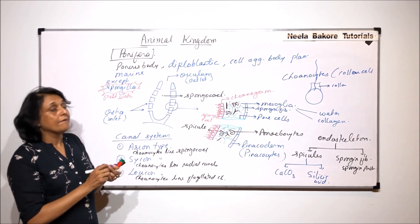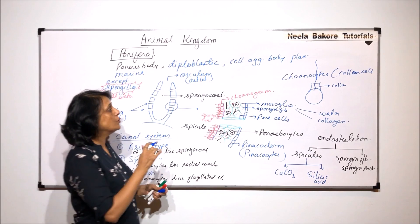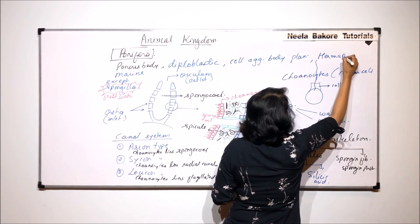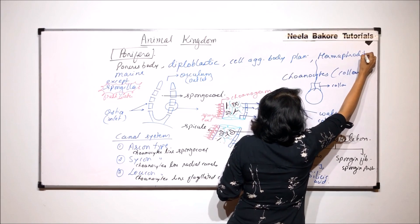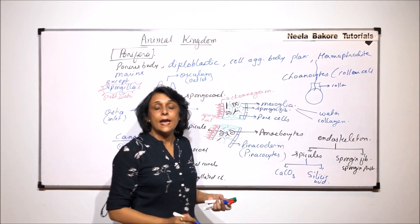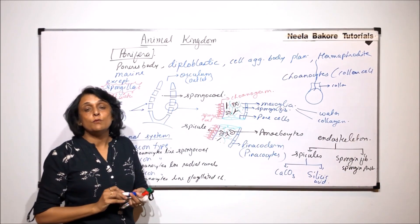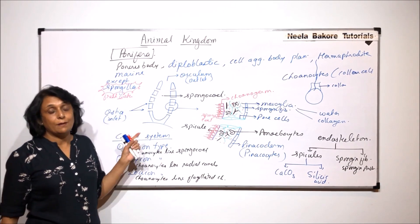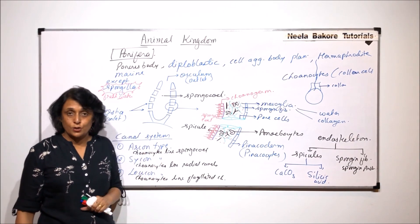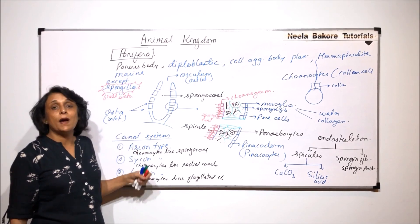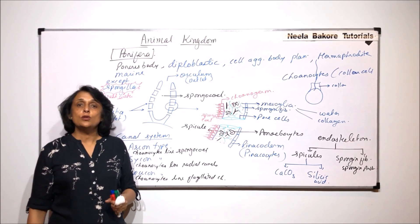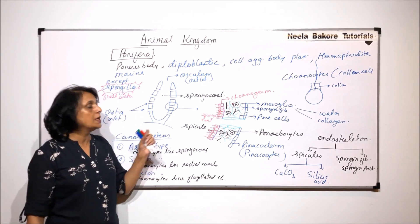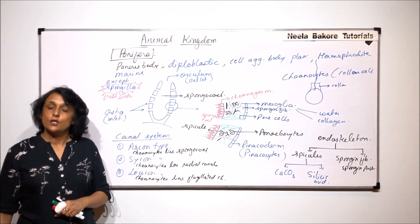Sponges are hermaphrodite, meaning the same organism has both sex organs, so they show sexual reproduction. In the next part we will talk about the modes of reproduction, digestion, and excretion seen in the case of sponges.